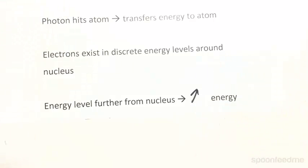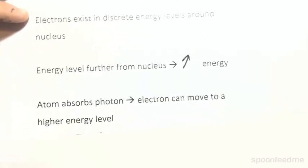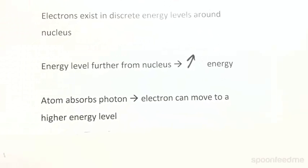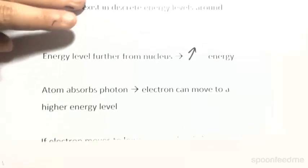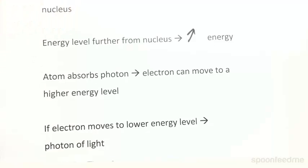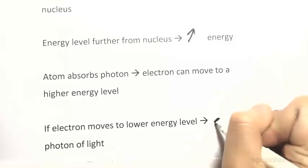When an atom absorbs a photon, this will result in the movement of an electron to a higher energy level, an energy level that is further from the nucleus. The same applies for the reverse. If an electron moves to a lower energy level, it will actually emit a photon of light.